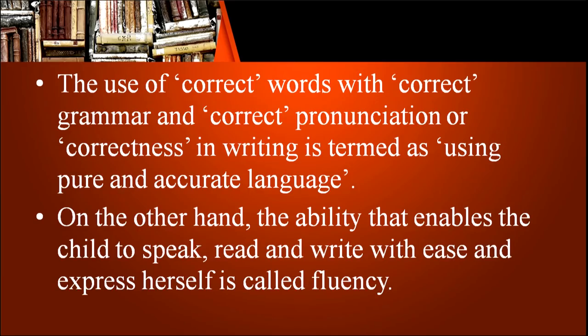The use of correct words with correct grammar and correct pronunciation — correctness in writing — is termed as using pure and accurate language, and this comes at a very later stage. If at the beginning we start looking at correct grammar and correct words, the child becomes conscious and under-confident, unable to use the language the teacher expects. The ability that enables the child to speak, read and write with ease and express herself is called fluency. We begin with fluency and gradually take the learner towards accuracy and correctness.